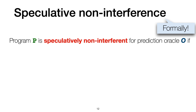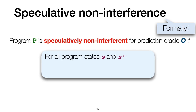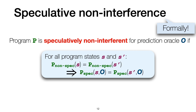We are now ready to formally define speculative non-interference. We say that program p is speculatively non-interferent for a specific prediction oracle o if, for any two program states s and s', whenever executing program p starting from s and s' produces the same sequences of observations under the non-speculative semantics, then executing p must produce the same sequences of observations also under the speculative semantics. That is, speculative non-interference ensures that executing p under the speculative semantics does not leak more information than executing p without speculative execution.